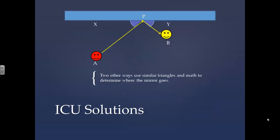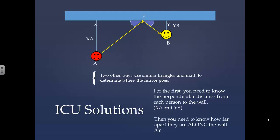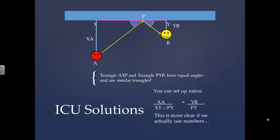Two other ways, use similar triangles in math to determine where the mirror goes. For the first, you need to know the perpendicular distance from each person to the wall, XA and YB. Then you need to know how far apart they are along the wall, XY. Triangle AXP and triangle PYB have equal angles and are similar triangles. So you can set up ratios. XA over XY minus PY equals YB over PY.